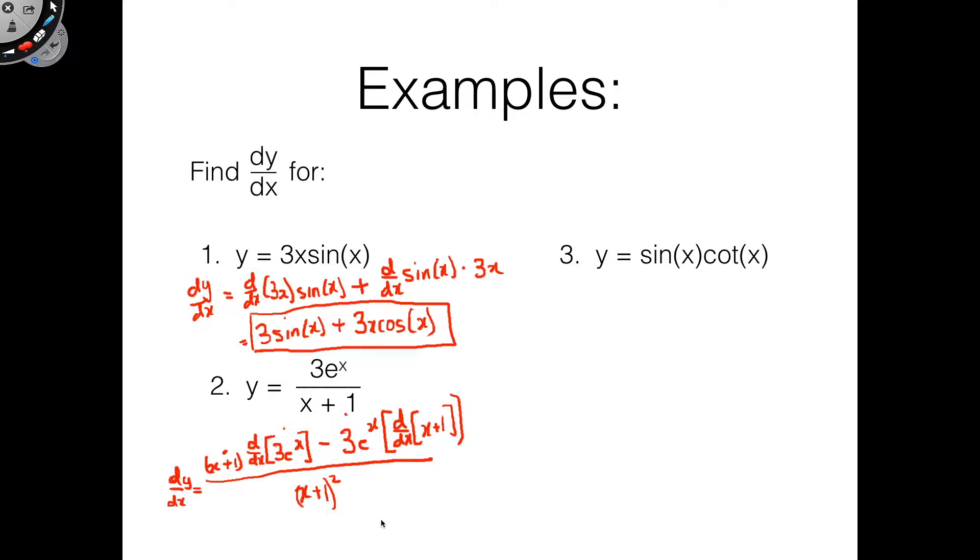So let's go ahead and evaluate this now. The derivative of 3e^x is 3e^x. So this would be 3e^x(x+1) minus 3e^x. The derivative of x+1 is just 1, so we don't even need to think about that. All over (x+1) squared.